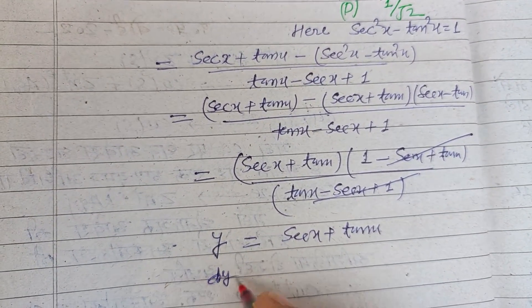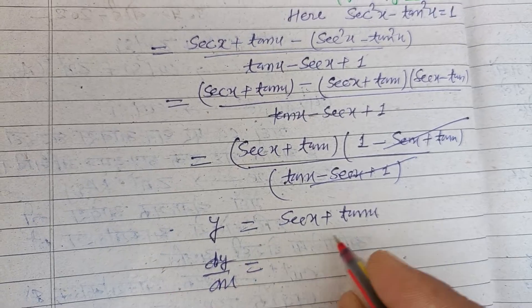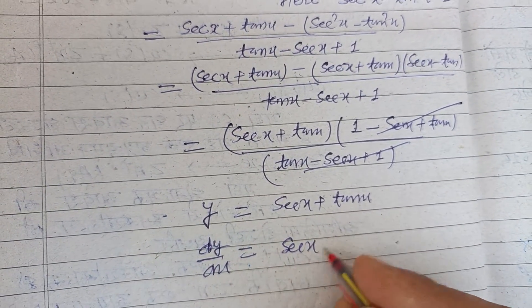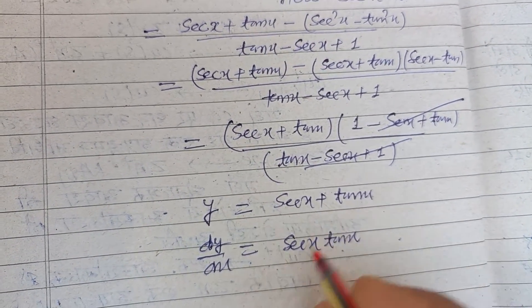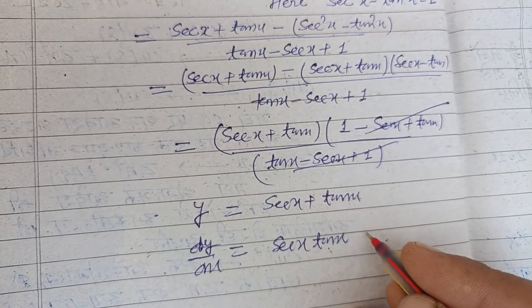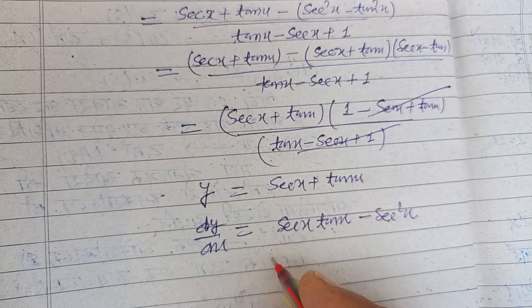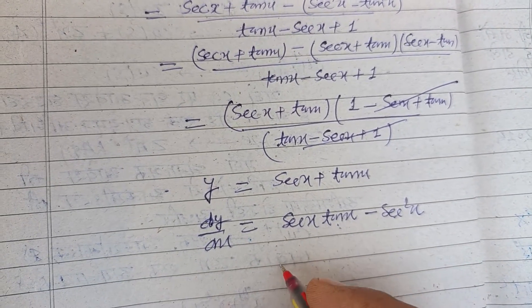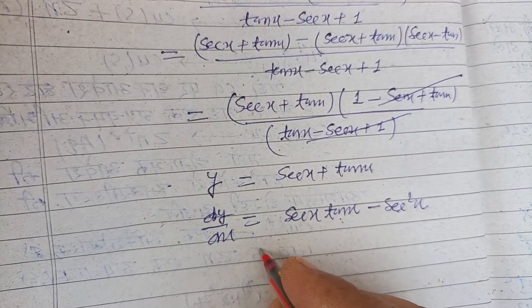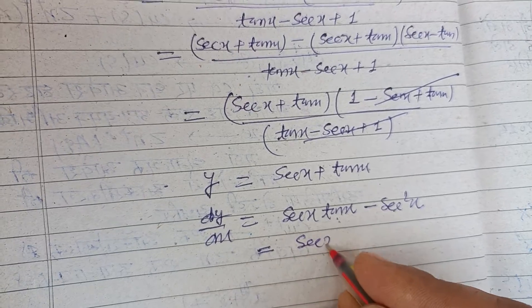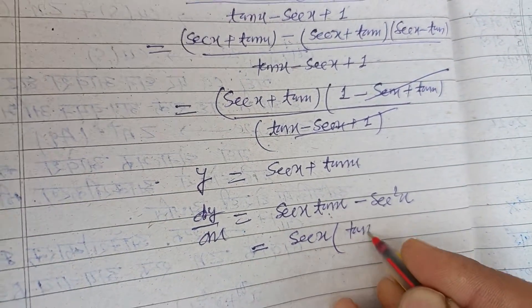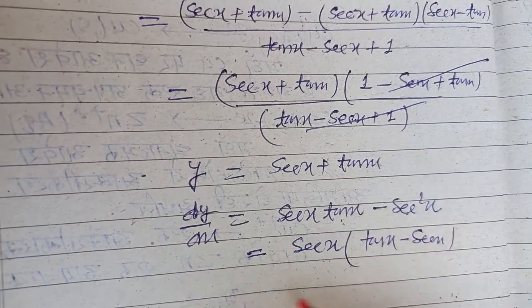Now differentiating with respect to x: dy/dx. The differentiation of sec x is sec x tan x, and differentiation of tan x is sec²x. Here we have sec x as common, so tan x minus sec x.